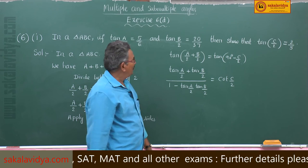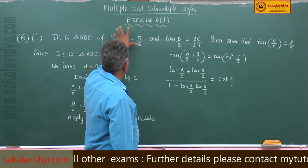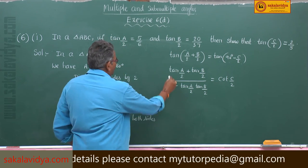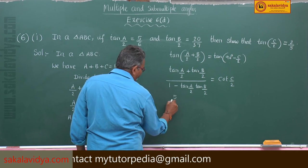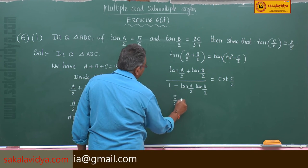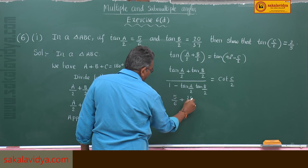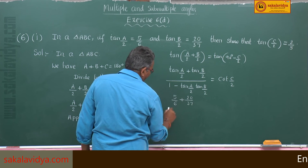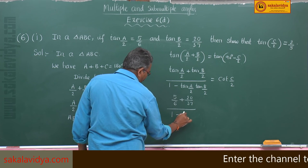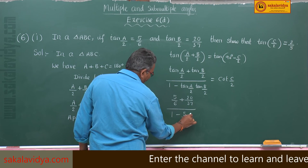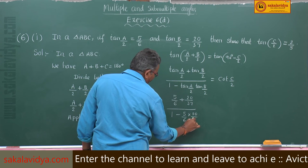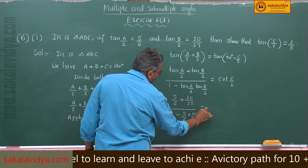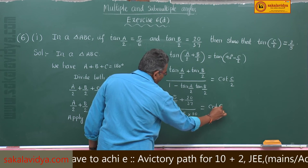We know the values of tan A by 2 and tan B by 2. Let us substitute. This is 5 by 6 plus 20 by 37, divided by 1 minus 5 by 6 multiplied by 20 by 37, whose value is equal to cot C by 2.